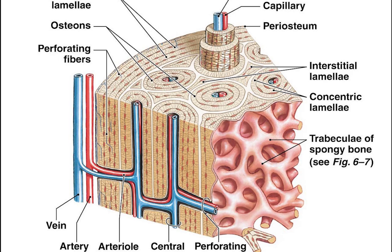Bone tissue, or osseous tissue — also called bone in the uncountable sense of that word — is hard tissue, a type of specialized connective tissue. It has a honeycomb-like matrix internally, which helps to give the bone rigidity. Bone tissue is made up of different types of bone cells.